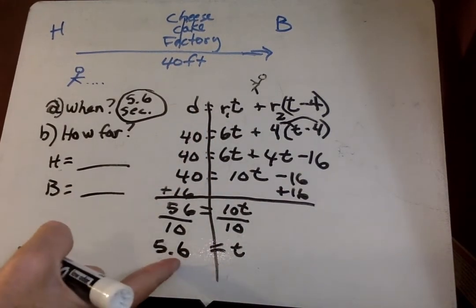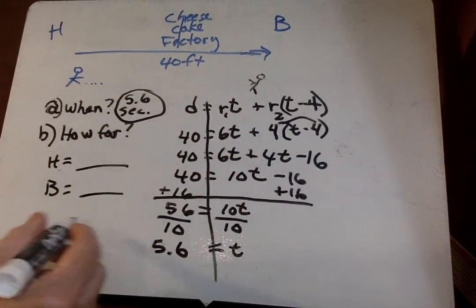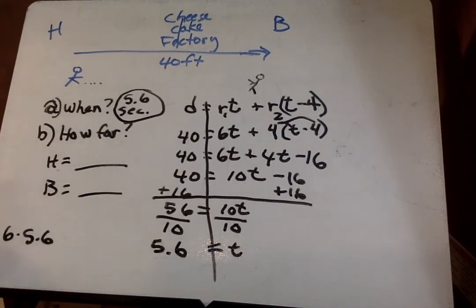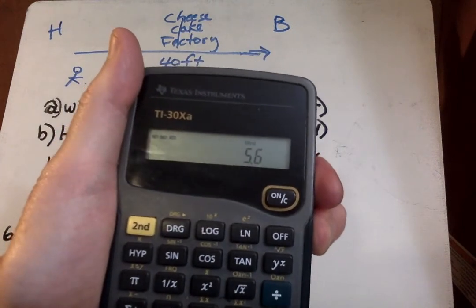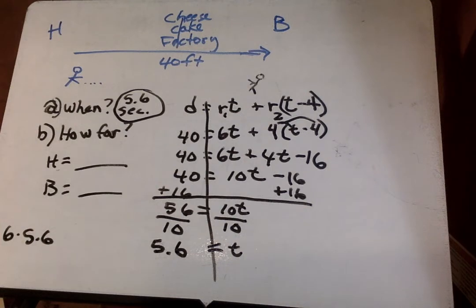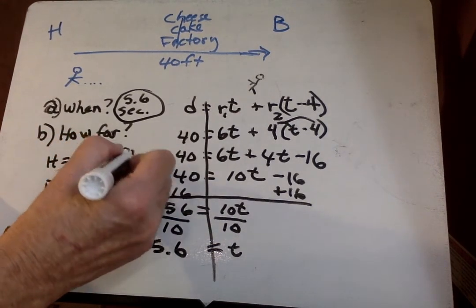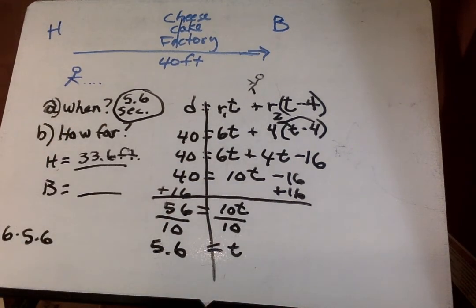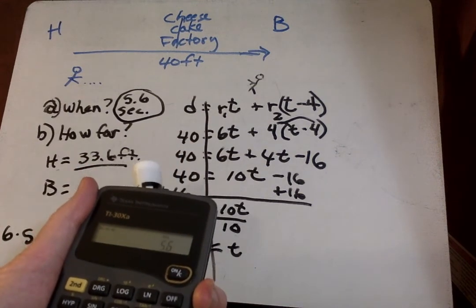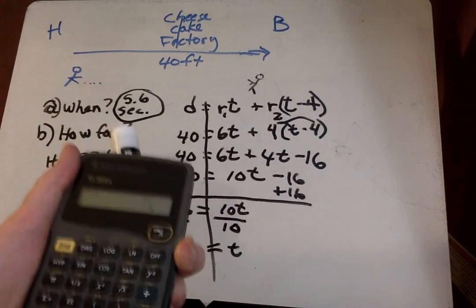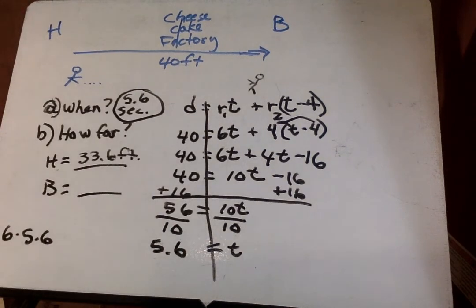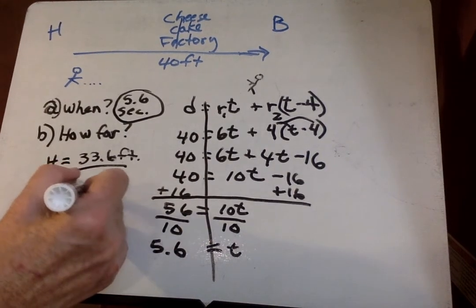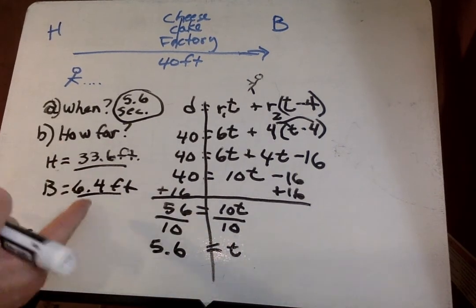And how far does each travel? Time is 5.6. So, we take 5.6 times the rate of 6 for Howard. So, 6 times 5.6. We take our handy-dandy calculator. 6 times 5.6 equals 33.6. So, Howard travels 33.6 feet. And let's see how far Bernadette travels. She's got 5.6 is her time. And then we have to go minus 4 because she's 4 seconds later. And then we have to times that. Oh, it was 1.6. That was right. 1.6. Then we have to times that by 4. So, 6.4 feet is how far Bernadette traveled. And if you add those two together, you should get 40 feet.